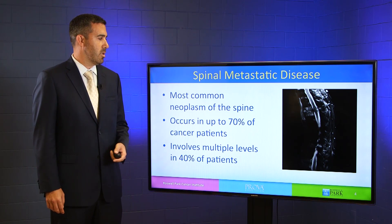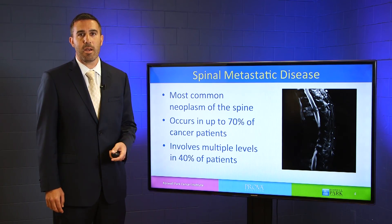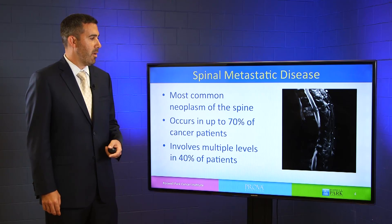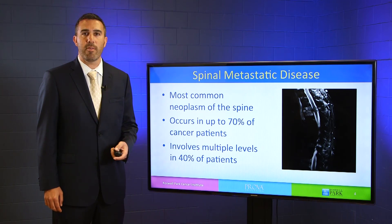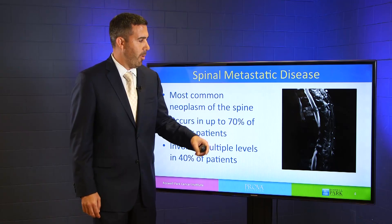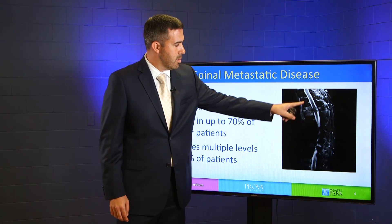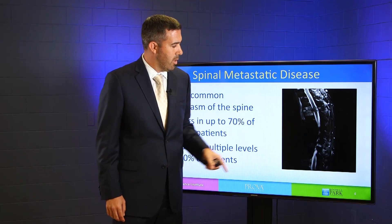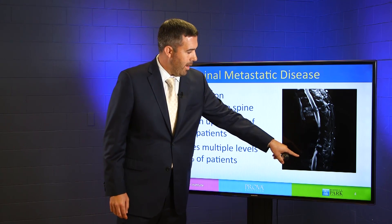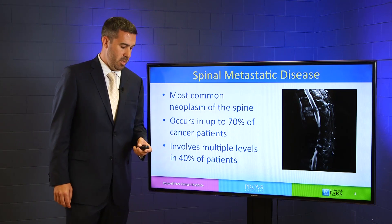Spinal metastatic disease is the most common neoplasm of the spine. It occurs in up to 70% of patients with a primary cancer diagnosis. Spinal metastatic disease can involve multiple levels in up to 40% of cases. What you see here is a representative MRI — a sagittal MRI image. You can see the vertebral bodies, the spinal cord posterior to the vertebral bodies, and multiple levels of vertebral bodies that enhance with contrast, indicating the presence of spinal metastatic disease.